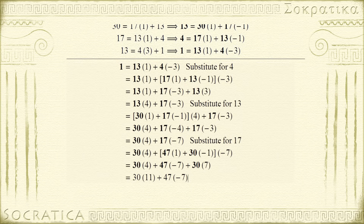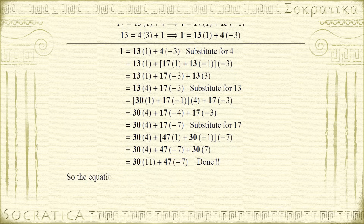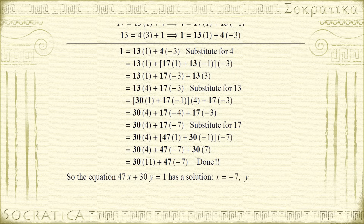We now have 1 = 30(11) + 47(-7), which is equal to the greatest common divisor on the left-hand side. We've solved the original Diophantine equation and found a solution. We didn't find all solutions, but we found one. The equation 47x + 30y = 1 has a solution — in fact an infinite number of solutions — but one solution is x = -7 and y = 11. In later lessons we'll see how to use this one solution to generate all of them.